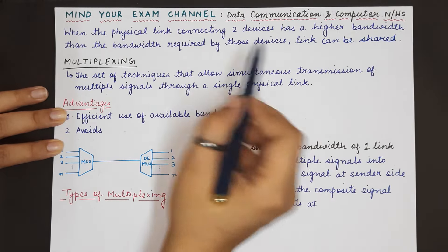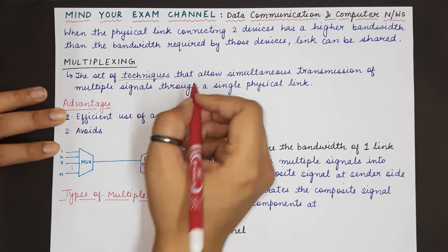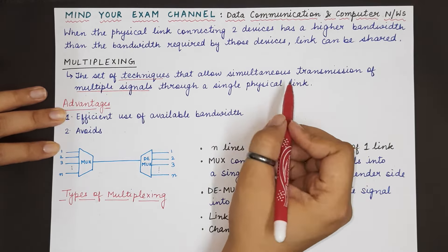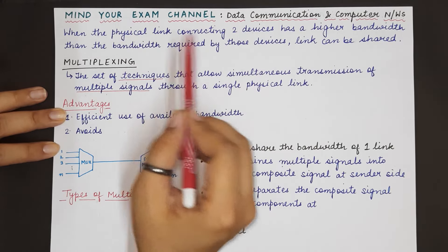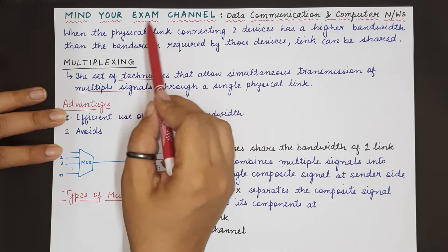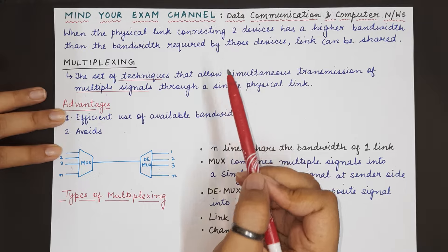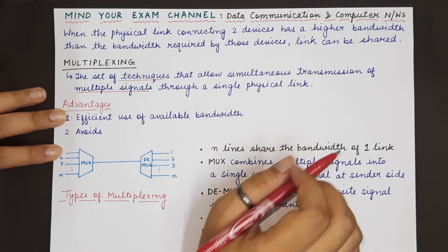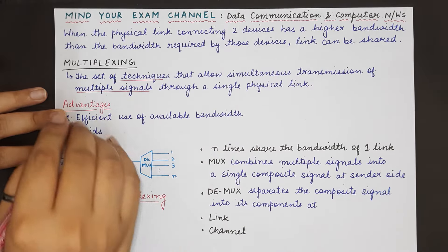To solve this problem we have the concept of multiplexing. Multiplexing is basically the set of all those techniques that allow simultaneous transmission of multiple signals through a single physical link. Earlier, a single link was used by one pair of devices, and the capacity or bandwidth of this link was not being utilized to its full potential — resulting in a wastage of bandwidth, which is a very important resource in data communication.